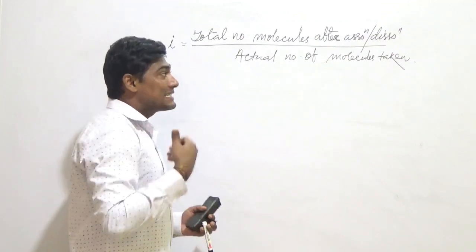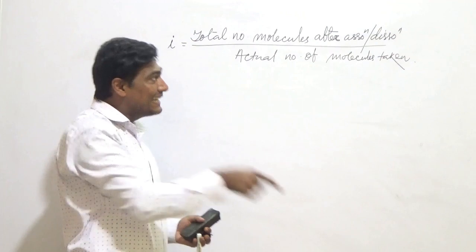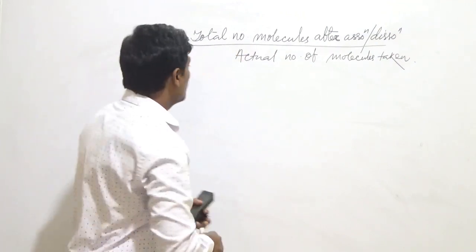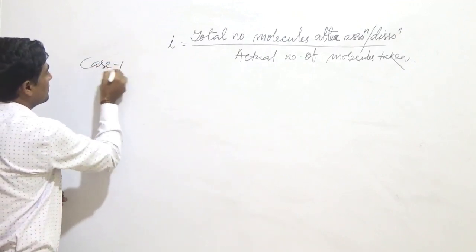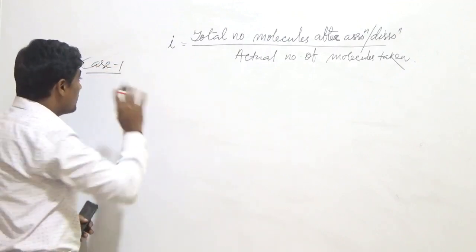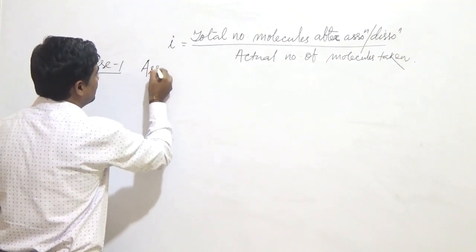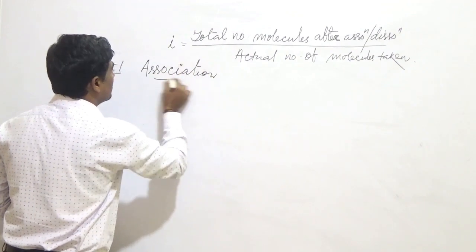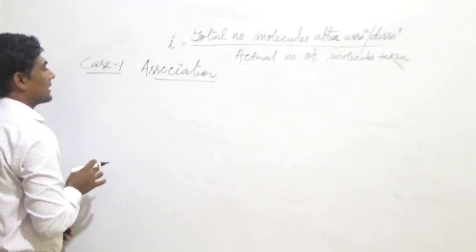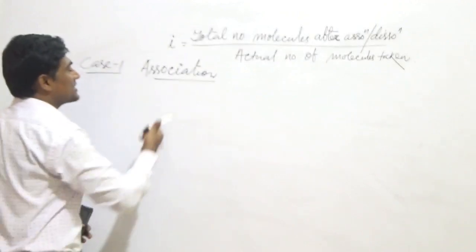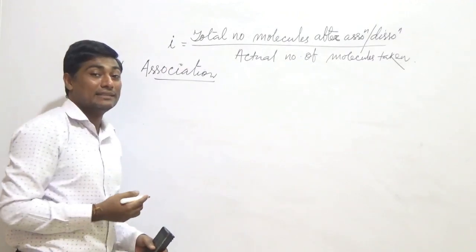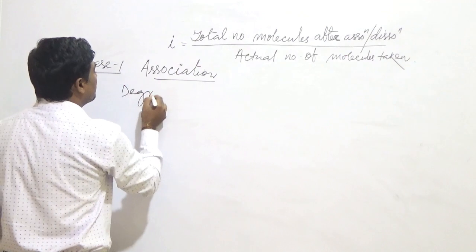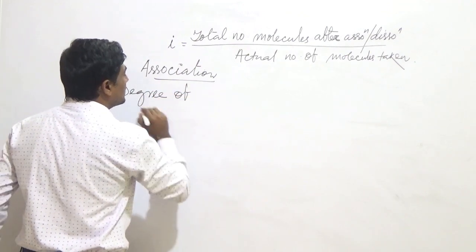We will now see how this Van't Hoff factor is related to degree of dissociation or association. Case one: association. In the case of association, we will derive the relationship between i and alpha, where alpha is the degree of association.